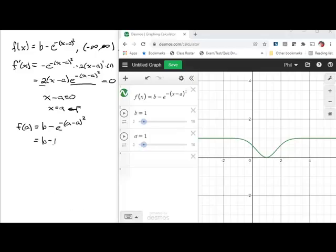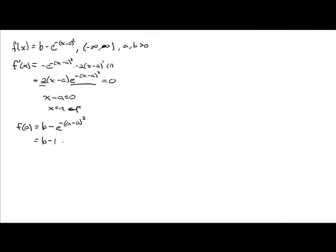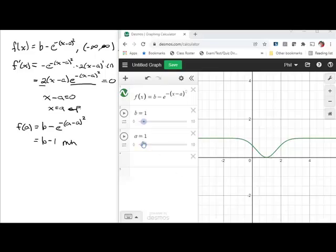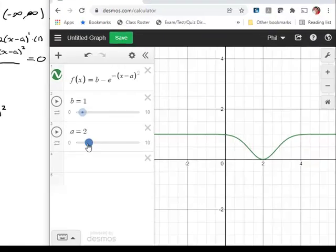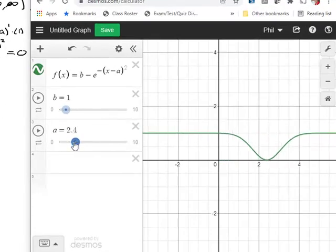So we clearly have a global min at b - 1. And what we see is if we move our parameter a, wherever a goes, our minimum goes.